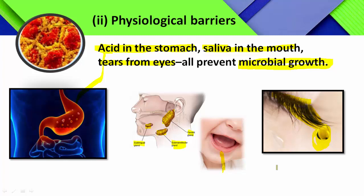Examples for physical barriers: skin and mucous membrane. Examples for physiological barriers: acid in the stomach, saliva in the mouth, and tears from the eyes. All of these are preventing microbial growth.